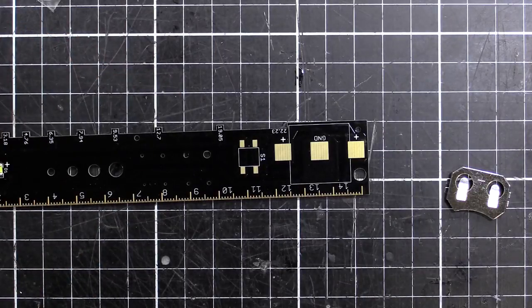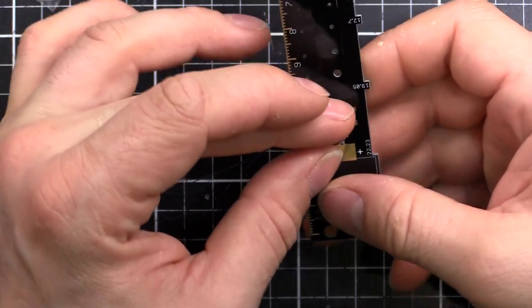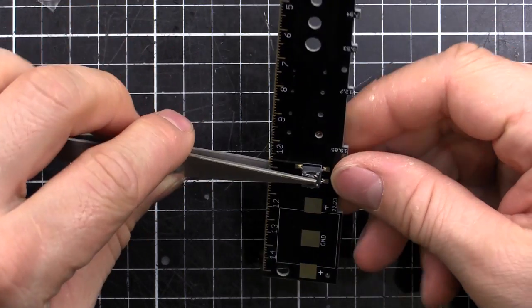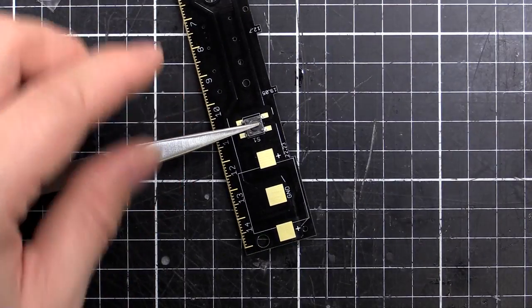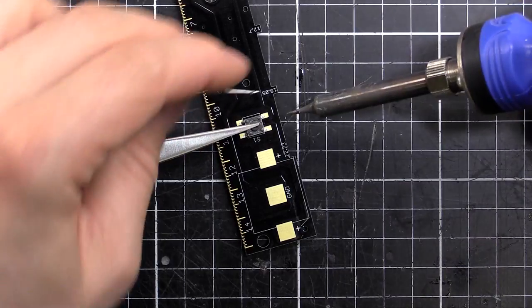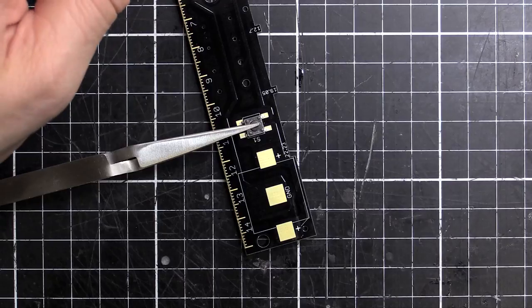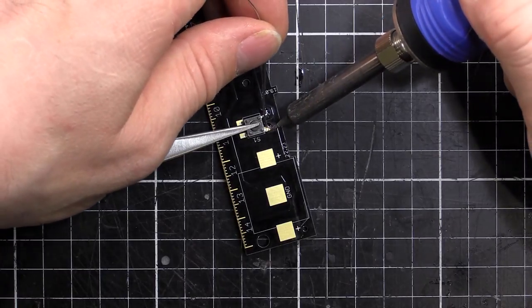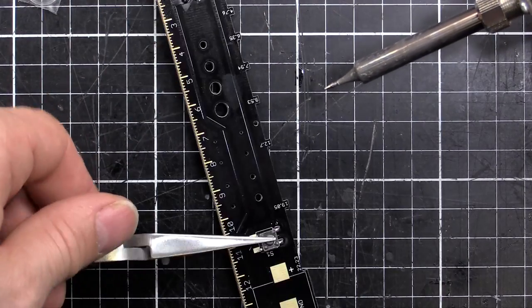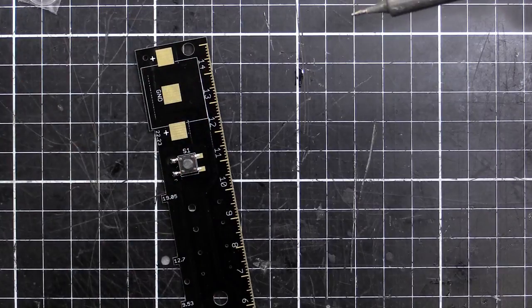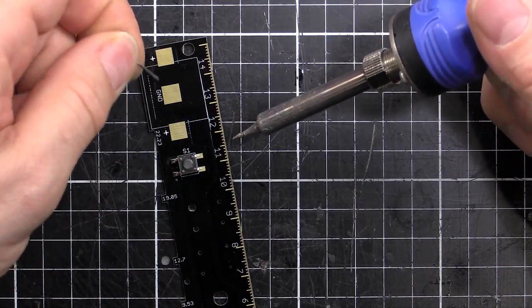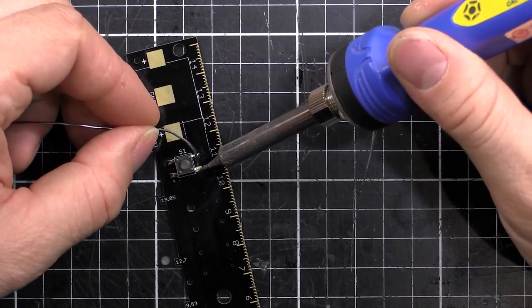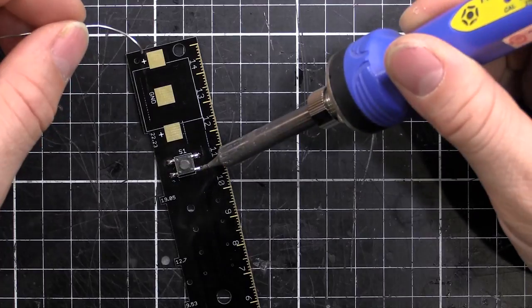Now we'll put the switch in. Alright, so it's the same deal with the button. So we'll just put that in place. Then we'll use our tweezers to hold it there. Now you want to be quick with the button as well because it's plastic, and you don't want to melt the plastic. I'll get some solder. Don't need very much solder, just a little bit, just enough to fill the pad. Just like that. Beautiful.